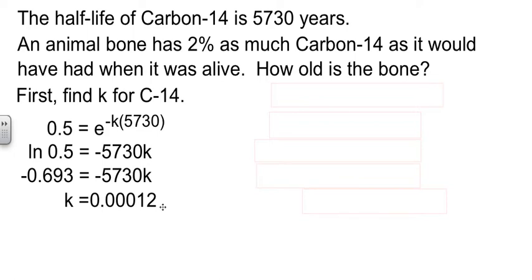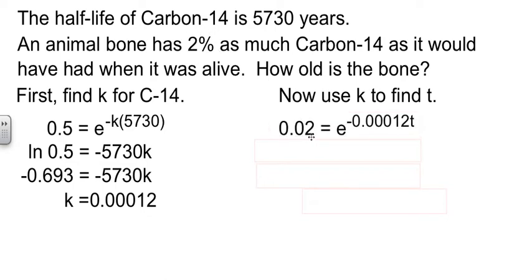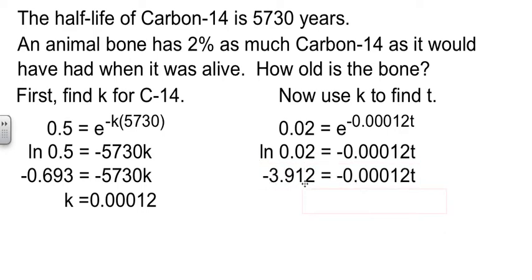Now, having a value for k here, now we're able to use that value of k to find t. And here's where the fun begins. 2% as a decimal is 0.02. Again, let's assume we should have 1 gram, then 2% would be 0.02 grams. Take the ln of both sides. ln of 0.02 is -3.912. And now divide, and we find out that the bone is 32,600 years old.